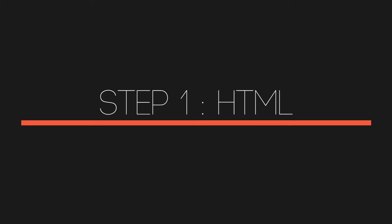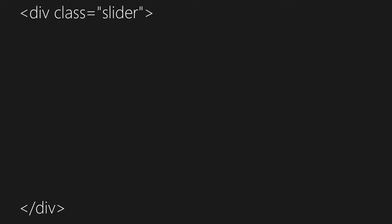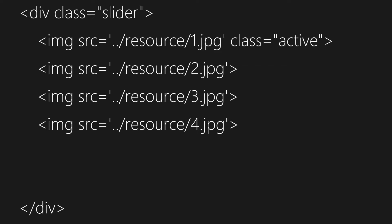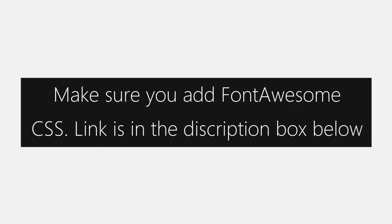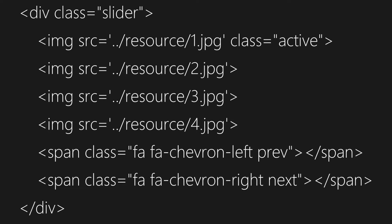So, let's begin with step one, that is HTML. At first, we'll begin by creating a div with class slider. Inside slider, we'll add some images, and our first image will have class active. After this, we'll add two span elements — one with a Font Awesome chevron left icon, and the other with a Font Awesome chevron right icon.